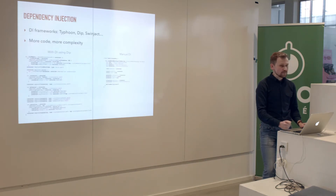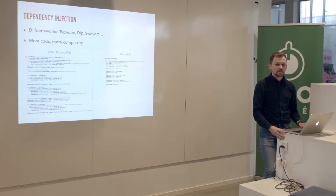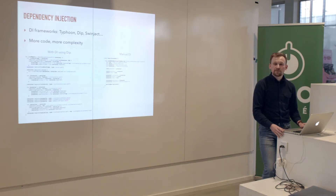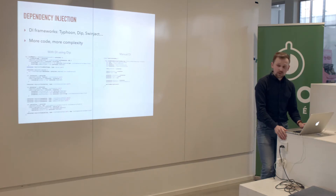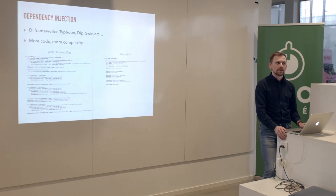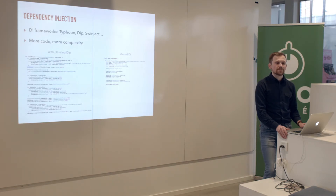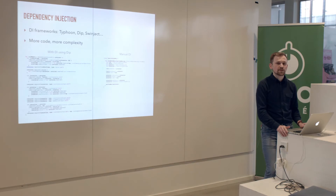Moving on to the next problem: dependency injection. With a lot of components and dependencies between them — and services which might have their own dependencies — a lot of people felt the need to use DI frameworks. At the point when we started our project there were no DI frameworks specifically for Swift. We could use Typhoon, but the problem is it comes from Objective-C and forces you to use Objective-C classes, meaning we couldn't use Swift features like structs. That was a deal-breaker for us.